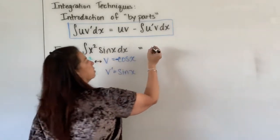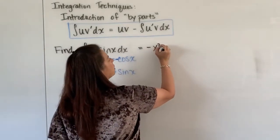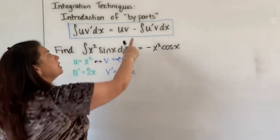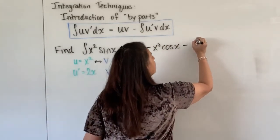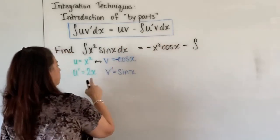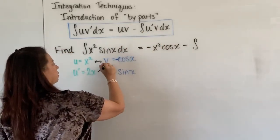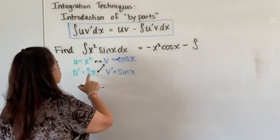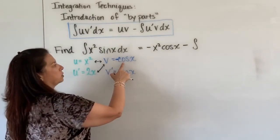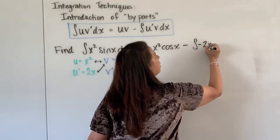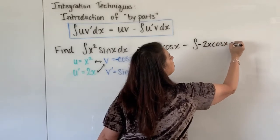It will be equal to u times v so that's these two getting multiplied together so that's x squared times a negative cosine x so we'll call that negative x squared cosine x for the first part then subtract our integral still of u prime times v so here's our u prime here's our v we want to multiply those two guys together so we have a 2x times a negative cosine x as my integrand here so that would be a negative 2x cosine x dx.